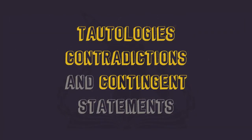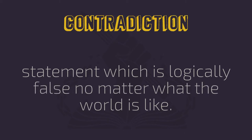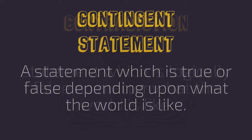Now let's look at our last concept, which deals with the truth values of individual statements: tautologies, contradictions, and contingent statements. A tautology is a statement which is logically true no matter what the world is like. Contradictions are statements that are logically false no matter what the world is like. And contingent statements — which are most statements — are statements that are true or false depending on what the world is actually like.